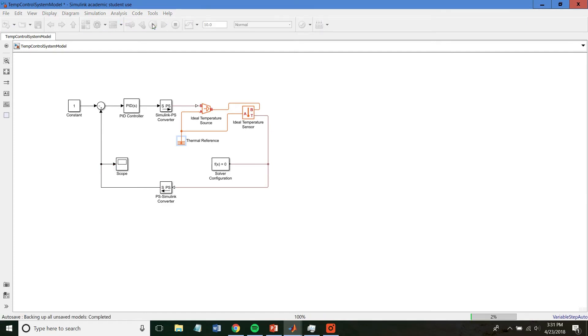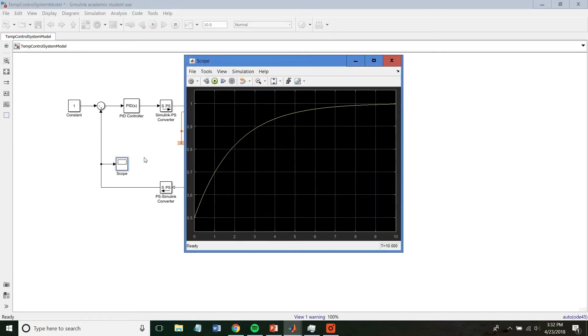The PS to Simulink converter converts the signal back to a Simulink signal so the feedback can then be analyzed. The graph proves that the temperature of a temperature control system settles at the desired input temperature value.